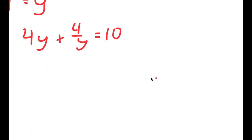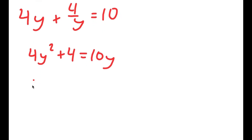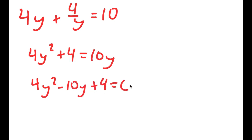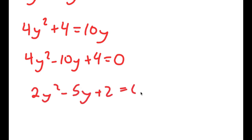And now to solve this, I'm going to multiply both sides by y. So I get 4y squared plus 4 is equal to 10y, meaning 4y squared minus 10y plus 4 is equal to 0. And this means that 2y squared minus 5y plus 2 is equal to 0.